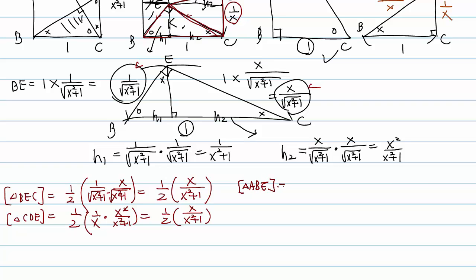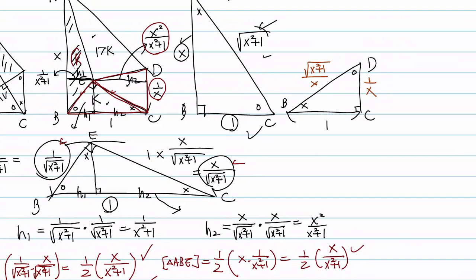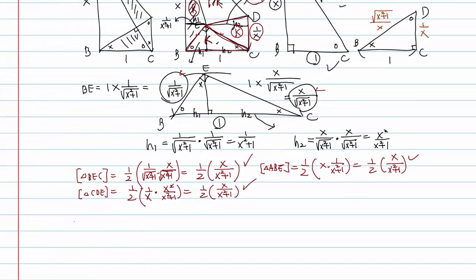For triangle ABE: one half times base X times height 1 over X squared plus 1, giving one half times X over X squared plus 1. All three triangle areas are equal! If each is K, and triangle ECD is 17K, the total is 20K.